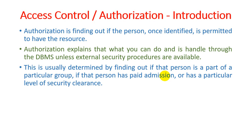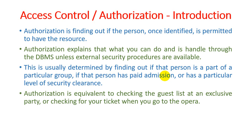Authorization is usually determined by finding out if a person is part of a particular group — like the HR department, which we discussed earlier — or if that person has paid admission or a particular level of security clearance. For example, staff working in the HR department can access all employee information at the primary level, including personal information, basic information, and contact information. Authorization is equivalent to checking a guest list at an exclusive party or checking for tickets when you go to the opera.